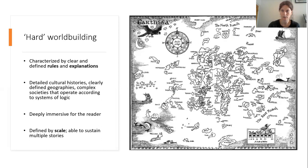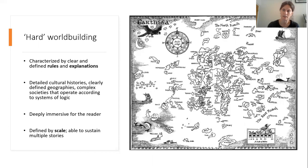Hard world building is characterized by clear and defined rules and explanations. These kinds of worlds have detailed cultural histories, clearly defined geographies and complex social systems, each operating according to systems of logic made clear within the story world. In other words, as readers we are able to know an extraordinary amount of information about the story world — we will likely know hundreds of years of history and how each region relates geographically and socio-economically to one another. These kinds of story worlds are deeply immersive for a reader, providing enormous amounts of material to interpret and engage with.